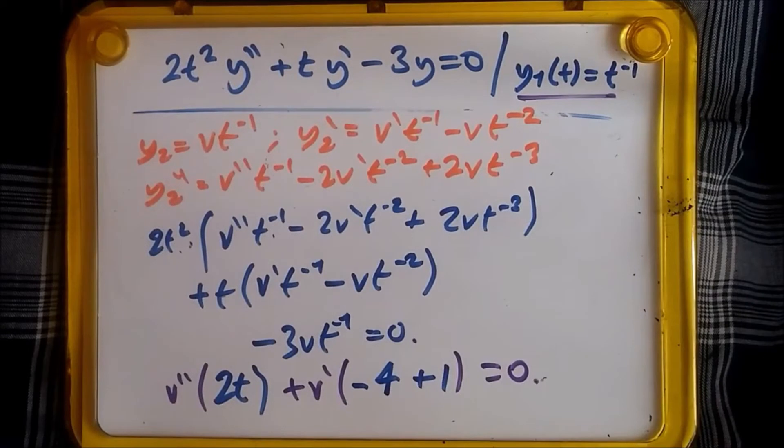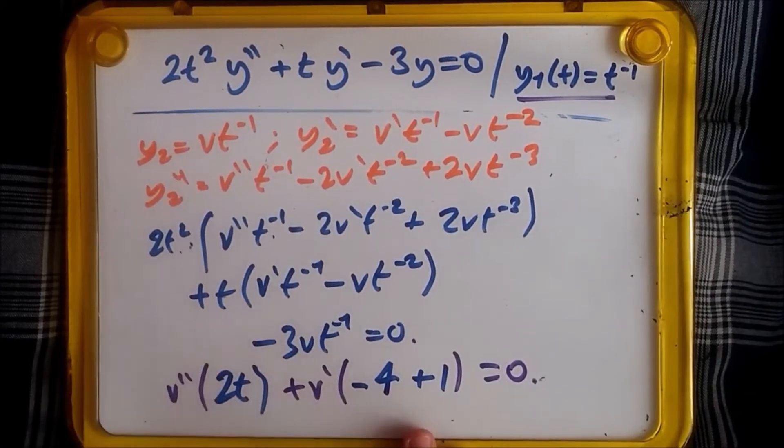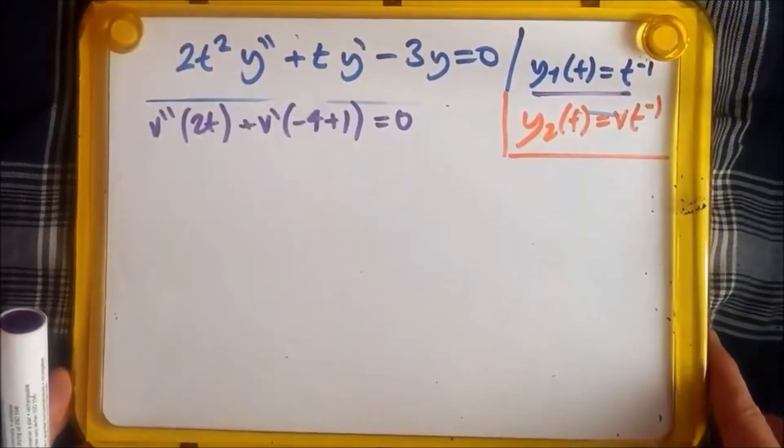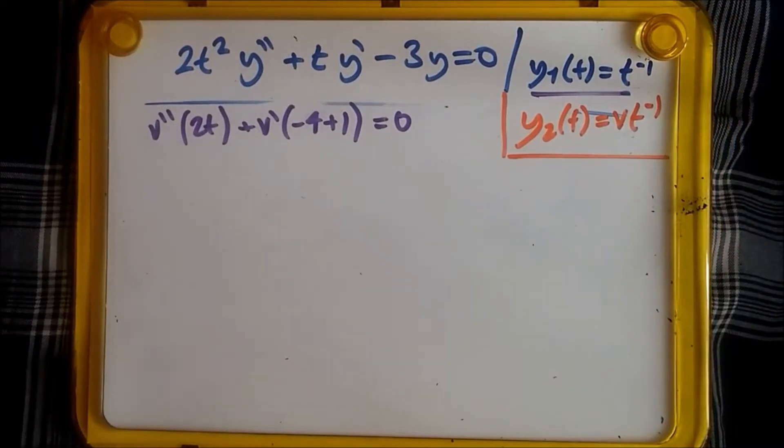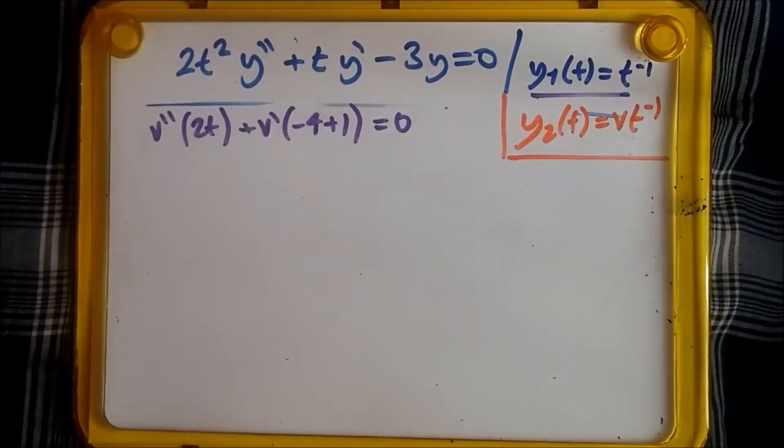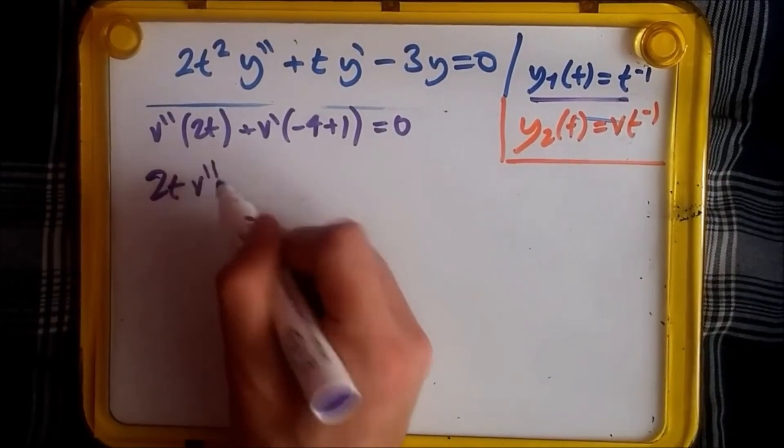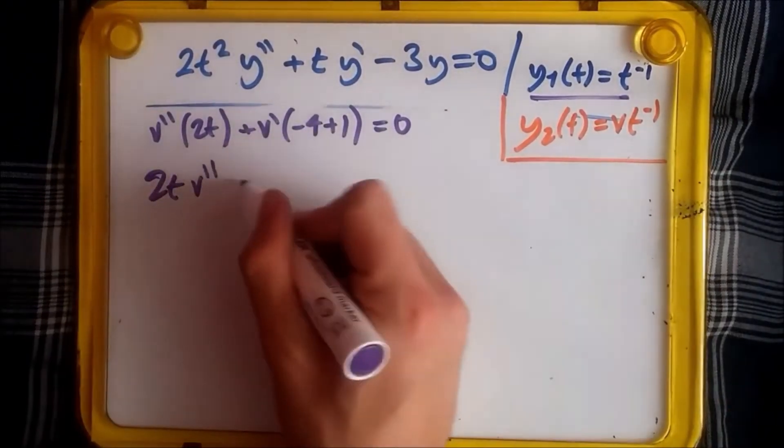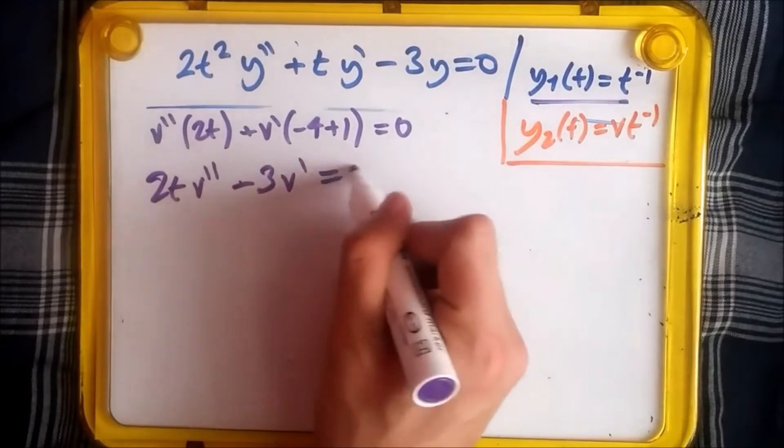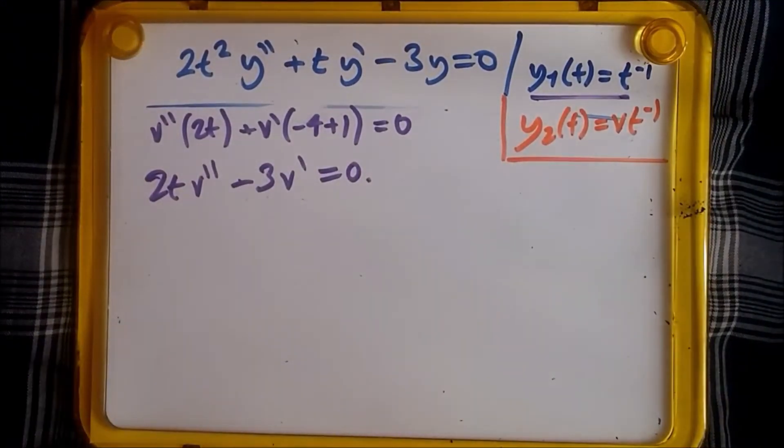Our actual order reduction has returned us with a very simple first order ODE. So now the true method of reduction order kicks in. Let's just tidy this up. We have v double prime times 2t, so just put in the front, 2t v double prime minus 4 plus 1 is negative 3, so minus 3 v prime equals zero.